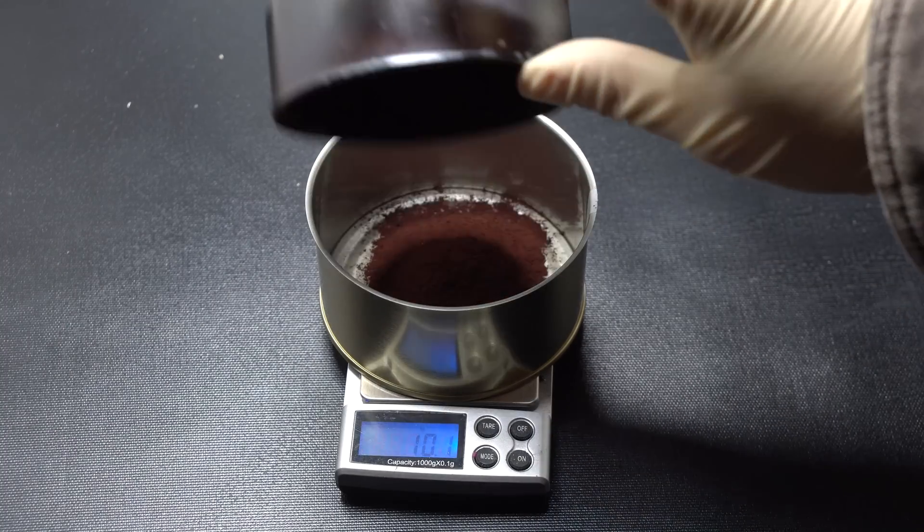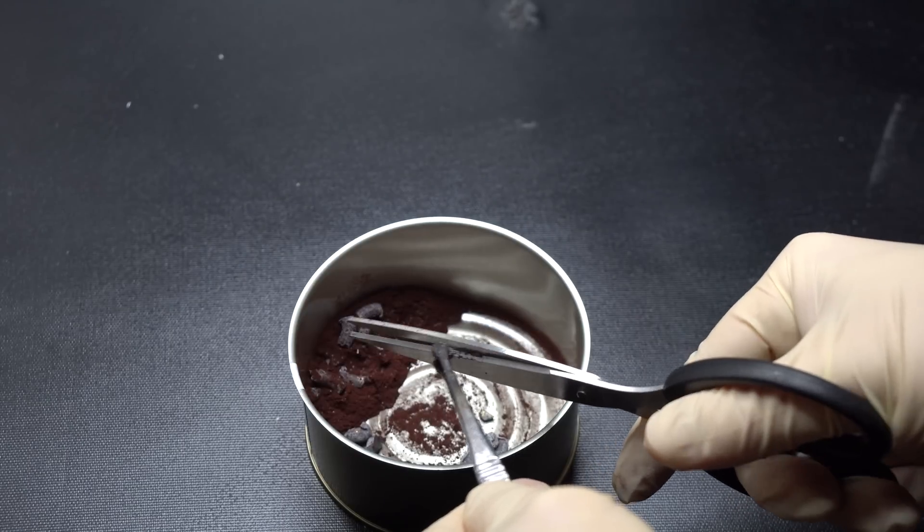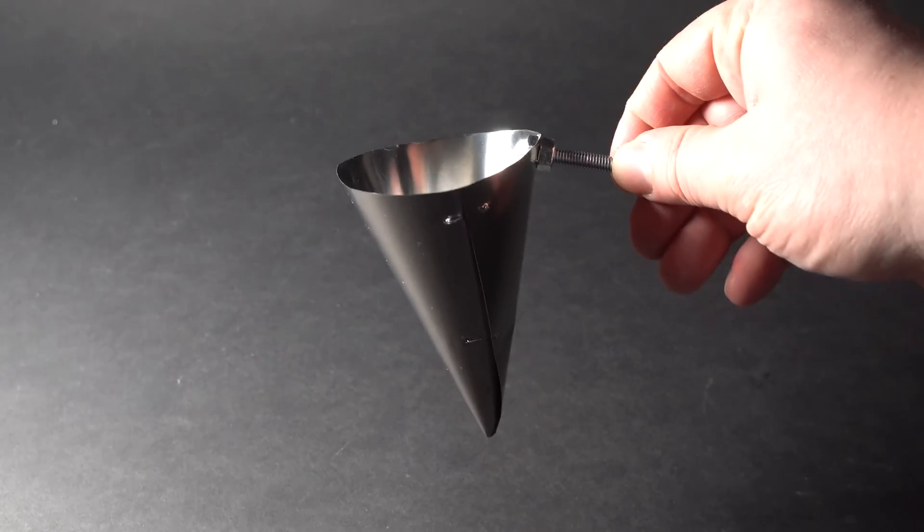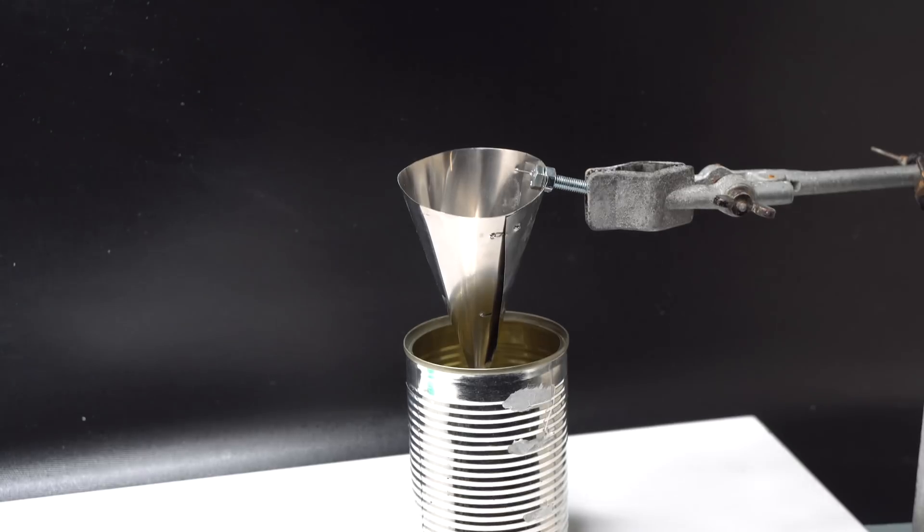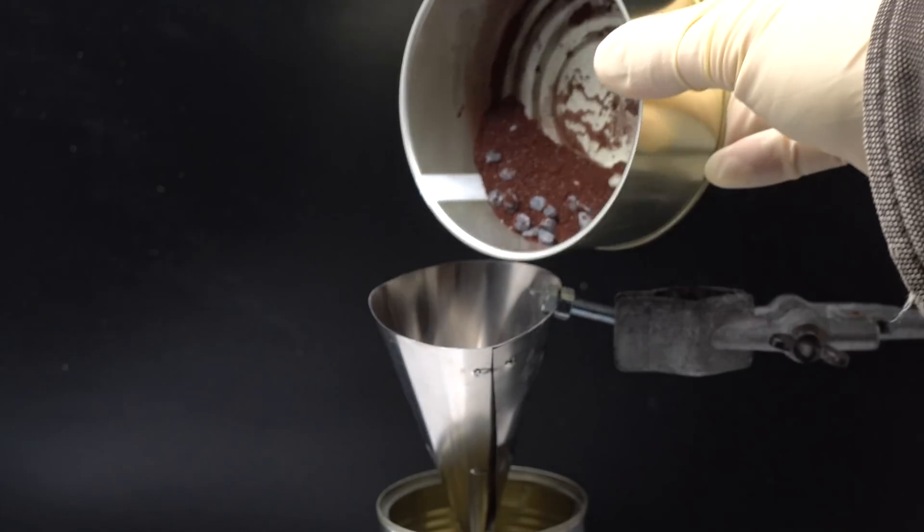In the end, I tried to reduce the obtained mixture of neodymium and praseodymium oxides with metallic lithium. To do that, I made such a crucible from niobium foil and attached it to the retort stand.